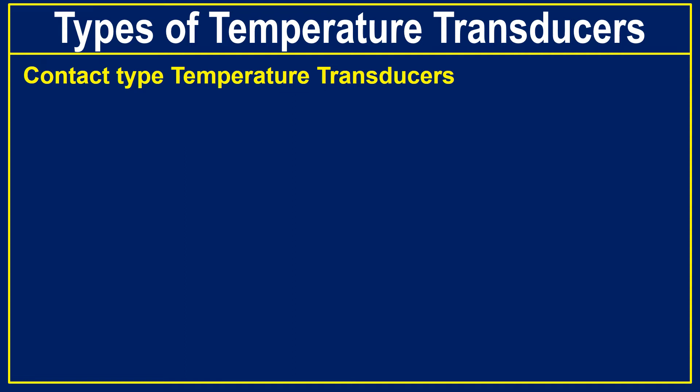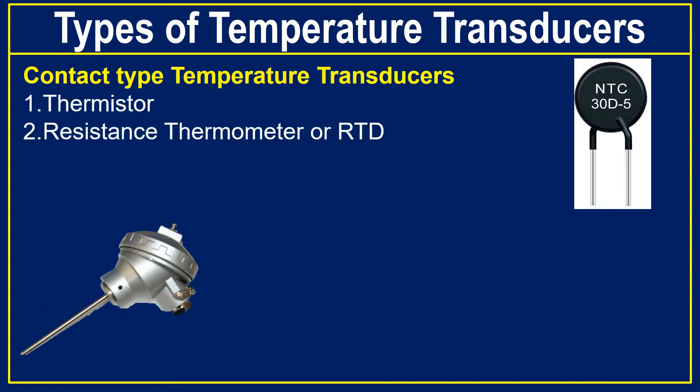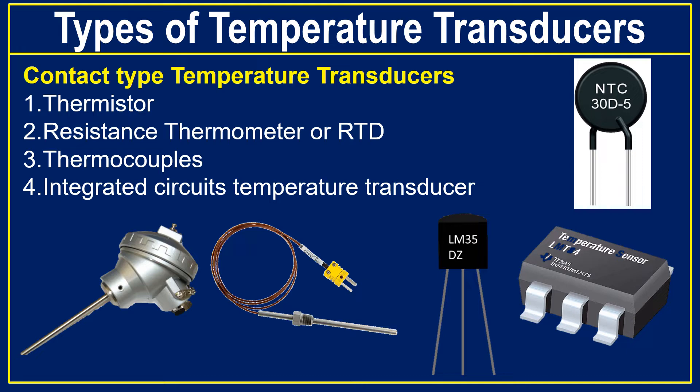The contact type temperature transducers can be classified based on their working principle. There are four types of contact type temperature transducers: thermistor, resistance thermometer or RTD, thermocouples, and integrated circuit temperature transducer.